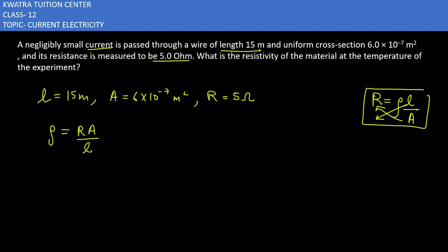Now we substitute the values. A is 6 × 10^-7, L is 15 meters, R is 5 ohms. We substitute: 5 × 6 × 10^-7 divided by 15, which simplifies to the calculation.